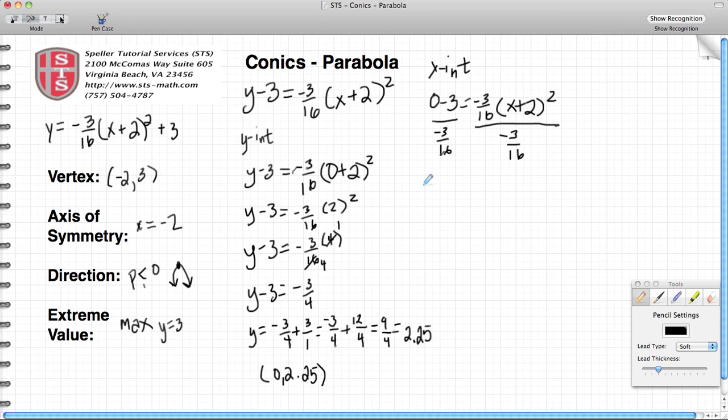And that's going to leave me with negative 3 over 1 times the reciprocal of this denominator. Whenever you divide by a fraction, you need to multiply by the reciprocal. In this case, the reciprocal is going to be negative 16 thirds, equal to negative 3 sixteenths divided by negative 3 sixteenths, which simplifies down to 1. And that just leaves me with (x plus 2) quantity squared.